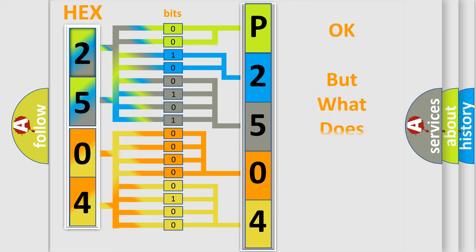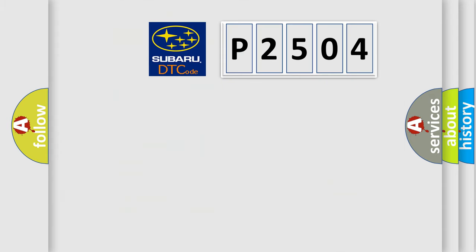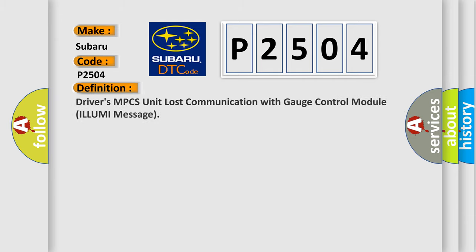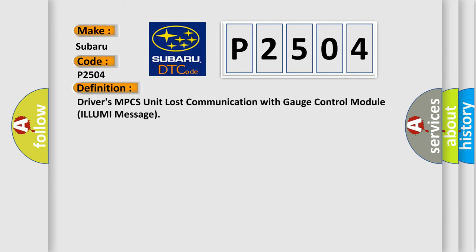The number itself does not make sense to us if we cannot assign information about what it actually expresses. So, what does the diagnostic trouble code P2504 interpret specifically for Subaru car manufacturers? The basic definition is: Driver's MPCS unit lost communication with gauge control module — ILLUMI message.